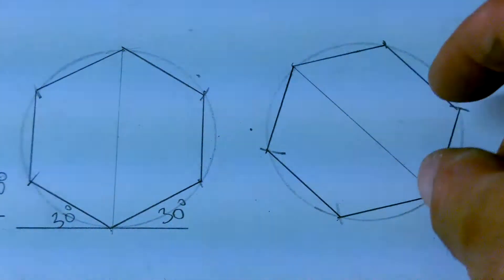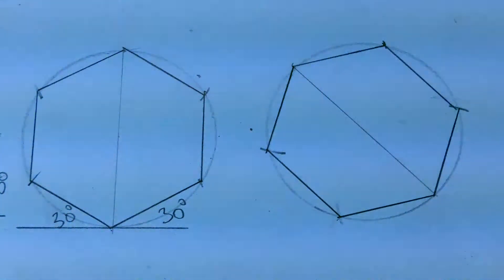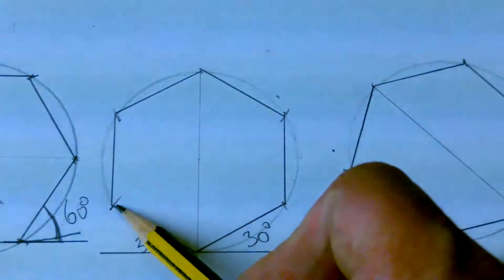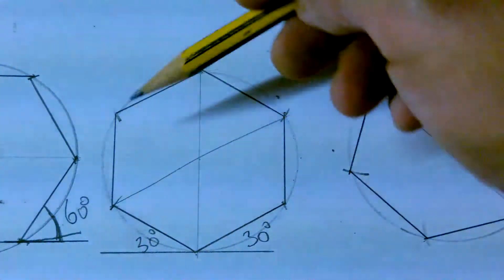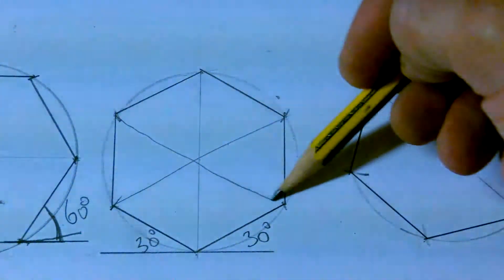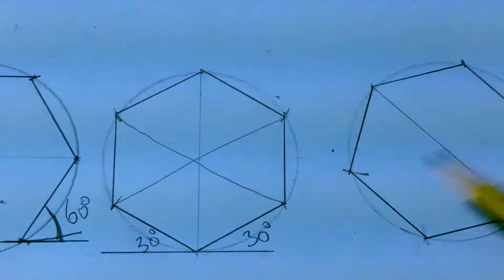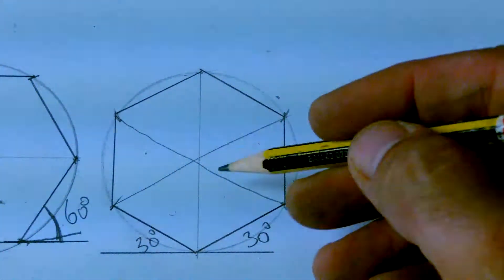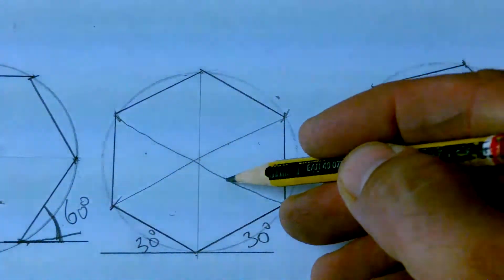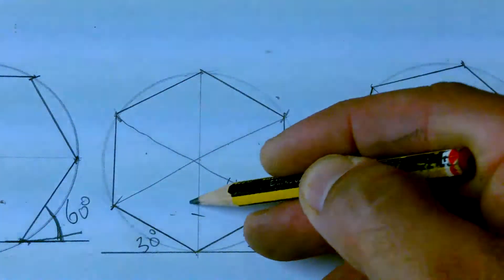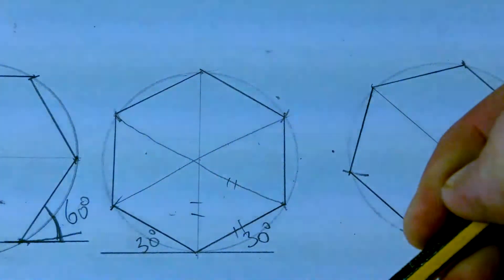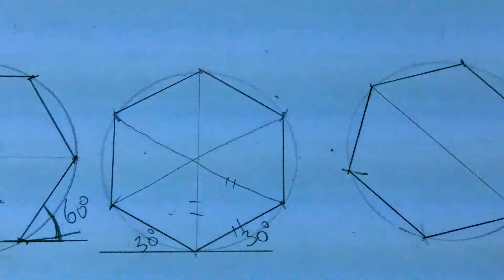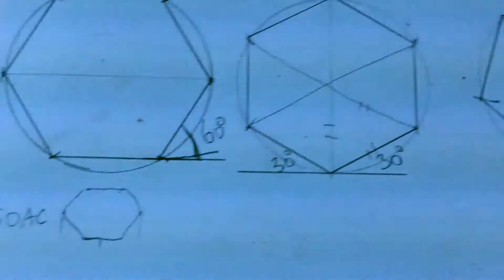After drawing the circle, I use the same radius to mark off the sides. That can only happen with a hexagon because if you divide the hexagon into equal triangles, they're all equilateral triangles — which means the radius equals the side. So those are your hexagon across corners methods.